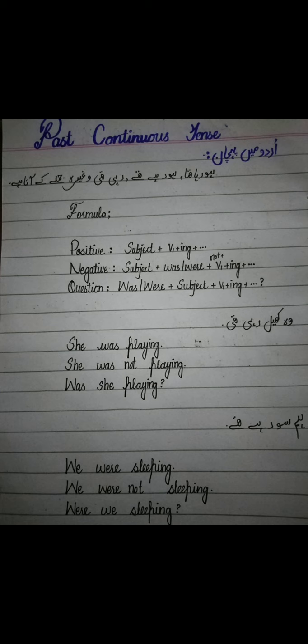سب سے پہلے اردو میں پہچان — جملے کی اردو میں جملے ہوتے ہیں ان کو آپ کیسے پہچان سکتے ہو کہ یہ continuous tense ہے۔ وہ ایسے کہ ہر جملے کے آخر میں رہا تھا، رہی تھی، رہے تھے وغیرہ آتا ہوگا — وہ past continuous tense ہوگا اور اس سے آپ کو پتا چلے گا کہ this is the tense of continuous and is from past.